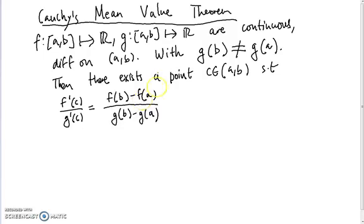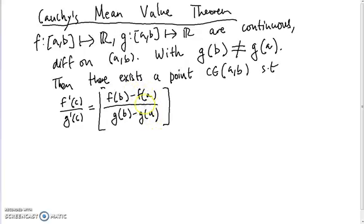There's a more generalized mean value theorem, attributed to Cauchy, which is especially useful in proving L'Hôpital's rule. It states that if f and g satisfy the same conditions as before, with g(b) ≠ g(a), then there exists a point c between a and b such that f'(c) divided by g'(c) equals f(b) minus f(a) over g(b) minus g(a). You can think of this as the quotient of the average gradients of the two functions.